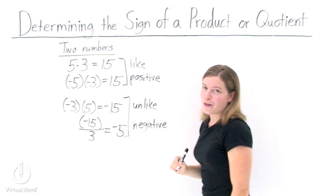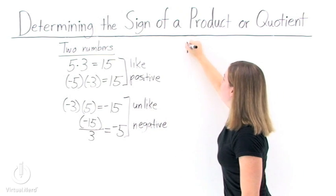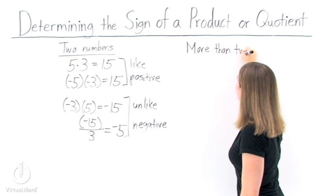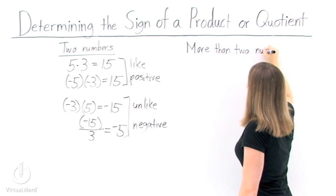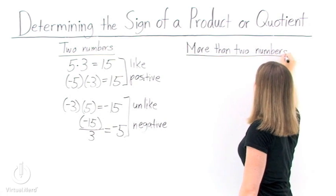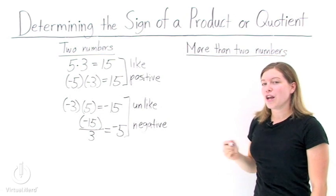But you and I both know that the world's not filled with just multiplying or dividing two numbers together. So we need to look at situations where we have more than two numbers we're dealing with. When we're multiplying or dividing together more than two numbers, first thing to do is do the operation but ignore the signs.